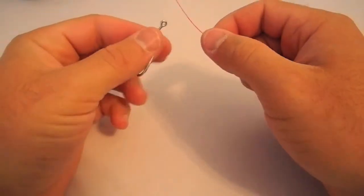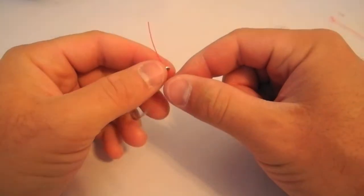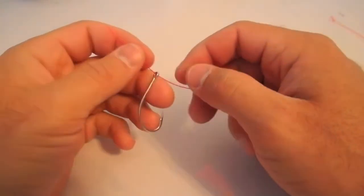What we're going to be tying here is a uni-style knot. I think some people also call this the duncan loop or something like that.